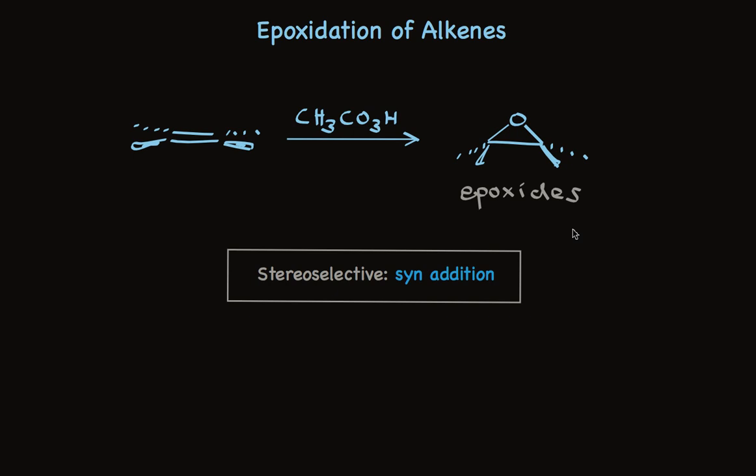Take a careful look at the reagent. This is not a carboxylic acid. It's a peracid. Carboxylic acids have two oxygens in the functional group. This has three.